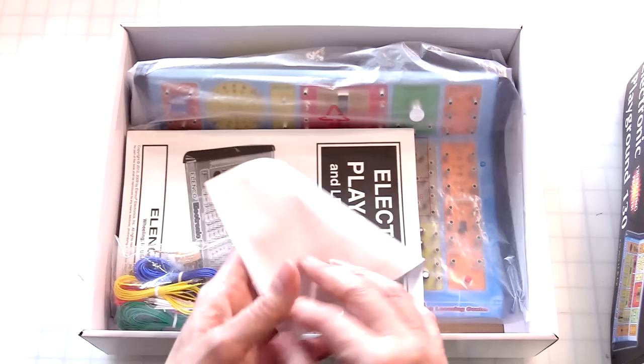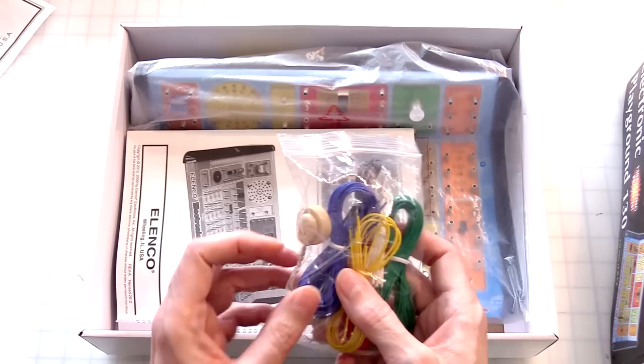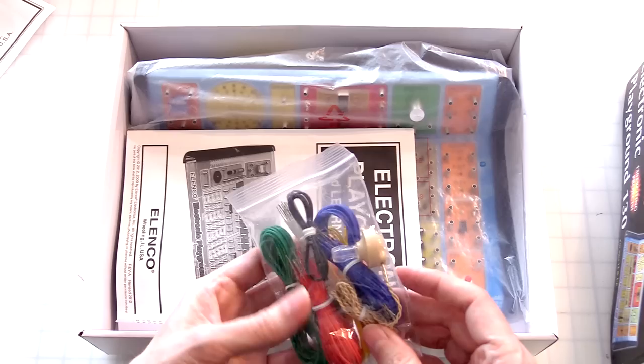All right. Nice, nice packaging, minimal, minimal packaging. Important, read this first. If you should encounter any problems or missing parts, do not return to the retailer, call us. Okay. Wheeling, Illinois. Will do, if we have any problems. Oh, okay. Oh, look, they got the crystal earpiece. Yeah, wires, pre-cut, just like the other kit.